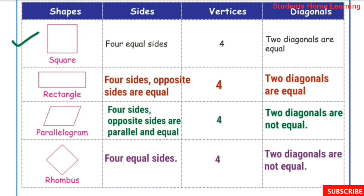First one: square. Square has 4 equal sides — 1, 2, 3, 4. It has 4 vertices (corners): 1, 2, 3, 4. It has 2 diagonals — the lines joining opposite vertices. The lengths of the 2 diagonals are equal.